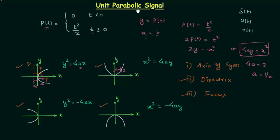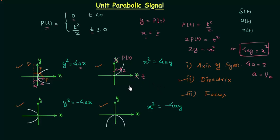In the case of the unit parabolic signal, when time t is less than 0, P(t) = 0. This means we only have the parabolic waveform for t ≥ 0; when t is less than 0, the signal is zero. So this is the complete waveform of the unit parabolic signal, where in place of y we have P(t) and in place of x we have time t.